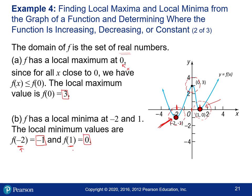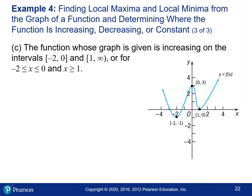The local minimums are the y-values: -1 when x = -2, and 0 when x = 1. Now let's find where the function is increasing and decreasing. Think about when it's going up toward the right — if you were walking along the graph going right, you'd be going down here, but going up over here. So the function is increasing in those parts where it goes up to the right.